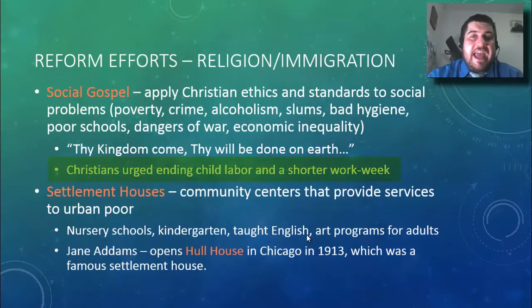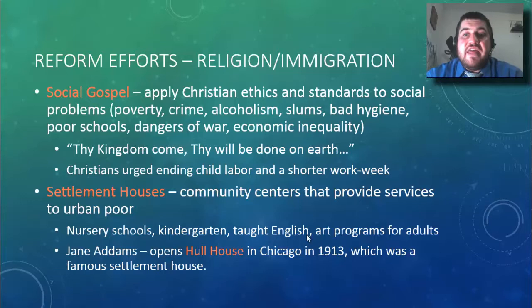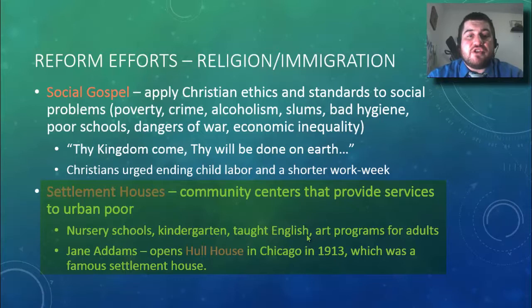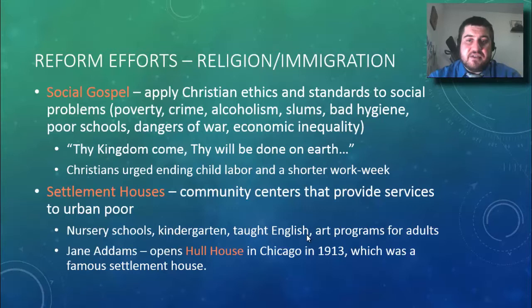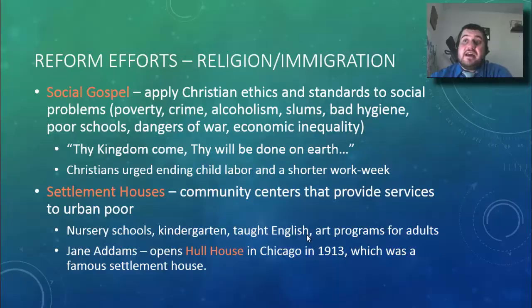Settlement houses are community centers that provide services to the urban poor, most of whom were immigrants. They provide nursery school services, kindergarten, English classes, and art programs for adults — think of a YMCA community center offering all these services. Jane Addams is very famous for opening Hull House in Chicago in 1889, which became the most famous settlement house, helping immigrants and urban poor get a leg up.